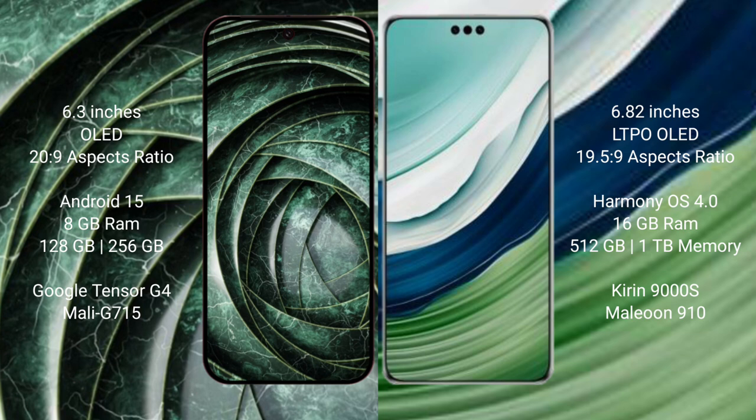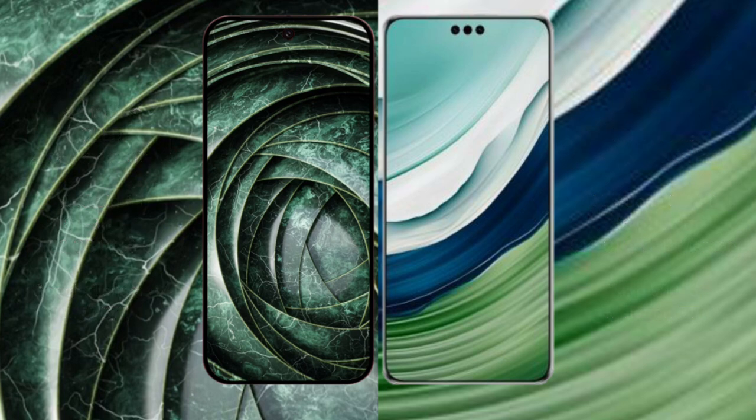Huawei Mate 60 Pro Plus comes with 16GB RAM and 512GB or 1TB internal storage, powered by the Kirin 9000H processor with GPU 910.